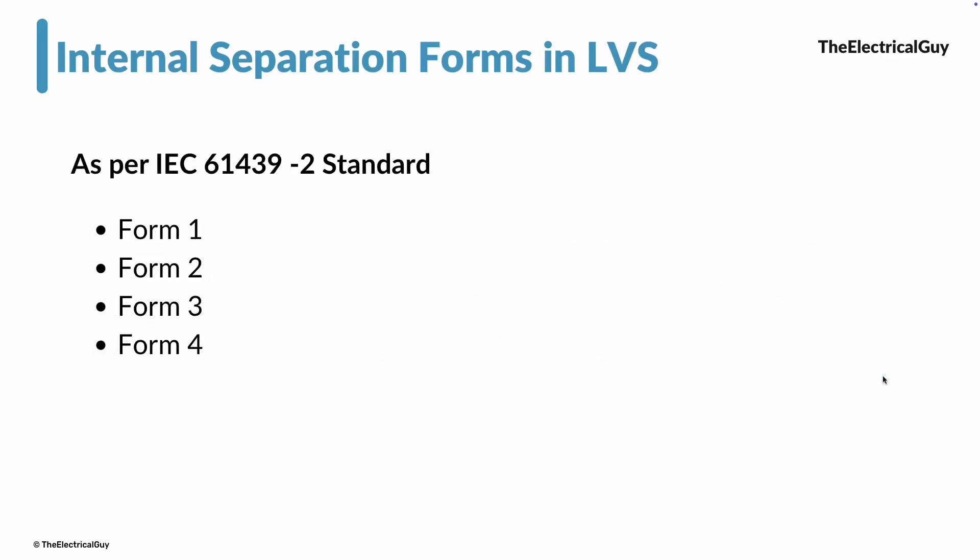The IEC standard has defined four major categories for separation forms: Form 1, Form 2, Form 3, and Form 4. Form 1 offers the least amount of safety and Form 4 offers the highest. The selection of form depends on where the low voltage switchgear is installed and its application. Where the highest safety is needed and downtime cannot be tolerated, Form 4 is the choice.